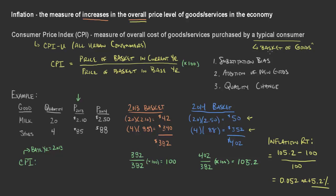How do you make the determination of how much of the basket should be housing versus food versus entertainment versus alcohol versus any number of other things that might go into the typical consumer's buying pattern?